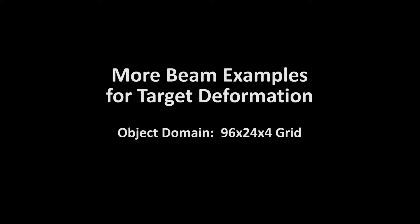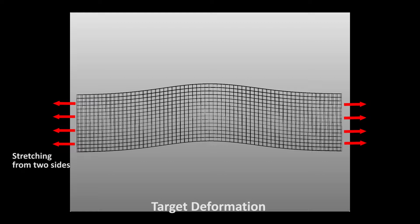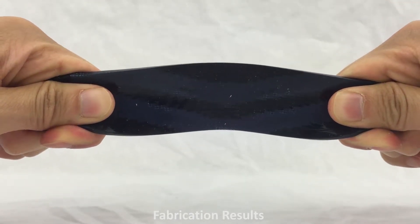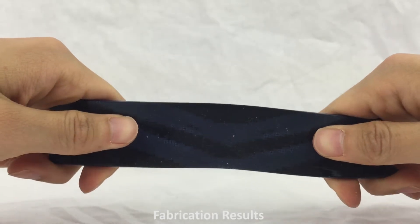For a given target deformation and boundary conditions, our algorithm can generate optimized continuous material distribution and map it to discrete microstructures for fabrication. We show the achieved beam deformation in real experiments.